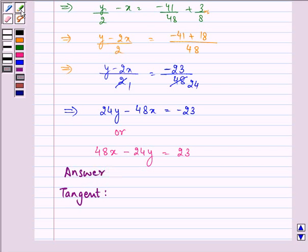that will form our answer to the given question. 48x minus 24y equal to 23. This completes the session. Hope you understood the whole concept well. Do take care of your calculations and have a very nice day ahead.